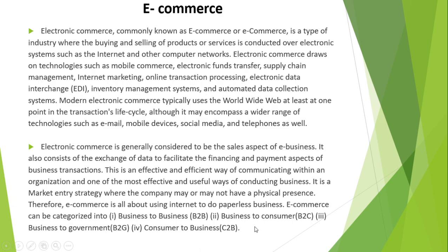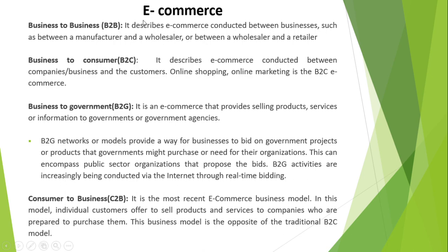We categorize electronic commerce into many parts: business to business, business to consumer, business to government, and so on. Now let's understand one by one. Business to business — if we do any business between two business persons, like a manufacturer and wholesaler, or a wholesaler and a retailer — these are two businesses — and if we conduct any kind of business between two business holders, that category is known as B2B, or business to business.